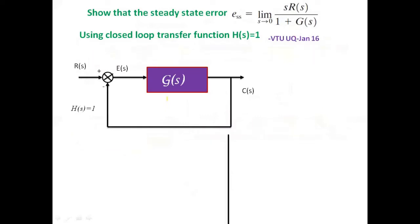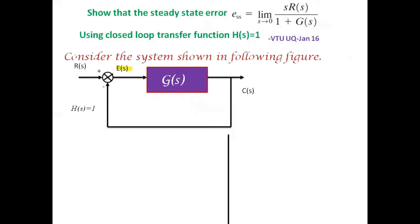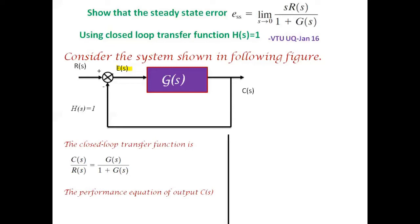We are going to prove for the steady state error — a PTU University question from January 2016. The question asks: show that the steady state error E_ss = lim(s→0) s·R(s)/(1+G(s)), using closed loop transfer function with H(s)=1. We have input R(s), output C(s), and error E(s). The closed loop transfer function is C(s)/R(s) = G(s)/(1+G(s)·H(s)), and the performance equation is C(s) = G(s)·E(s).